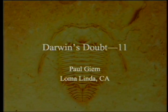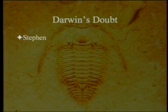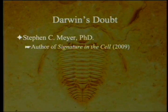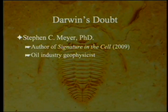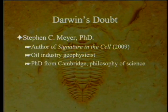Darwin's Doubt, Part 11. We've been going through the book Darwin's Doubt, written by Stephen C. Meyer, who is also the author of Signature in the Cell. He was originally an oil industry geophysicist who got a PhD from Cambridge in the philosophy of science.